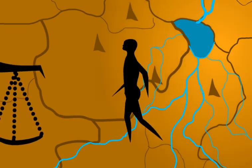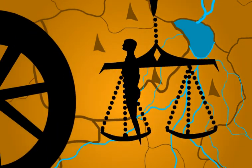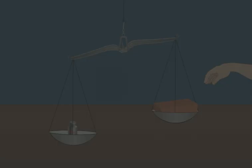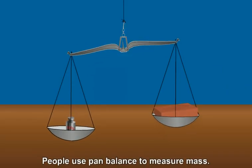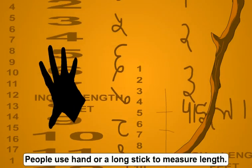Since long ago, people have been using various methods for measuring different quantities. For measuring mass, they used a pan balance. In early times, people used their hands or a long stick to measure length.